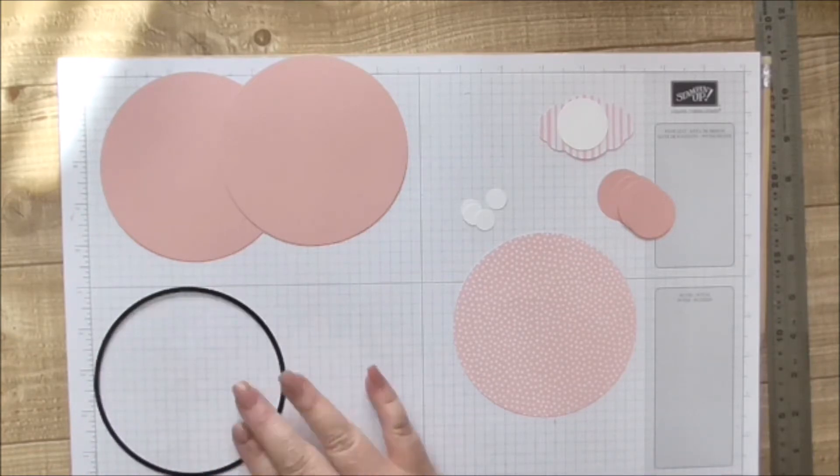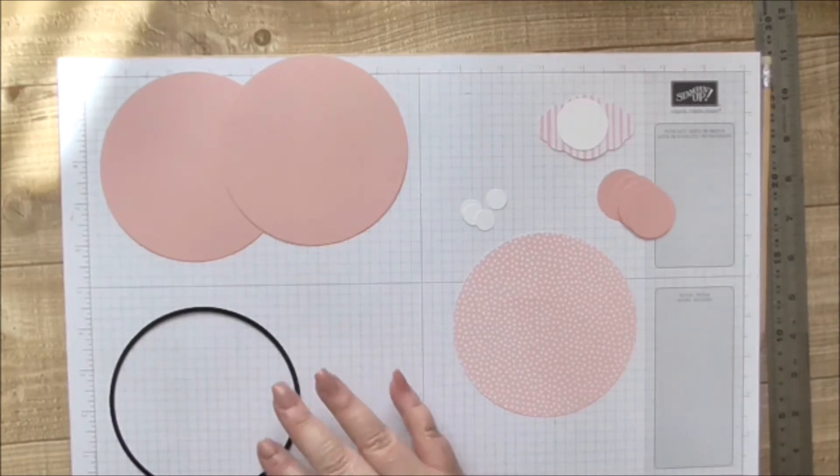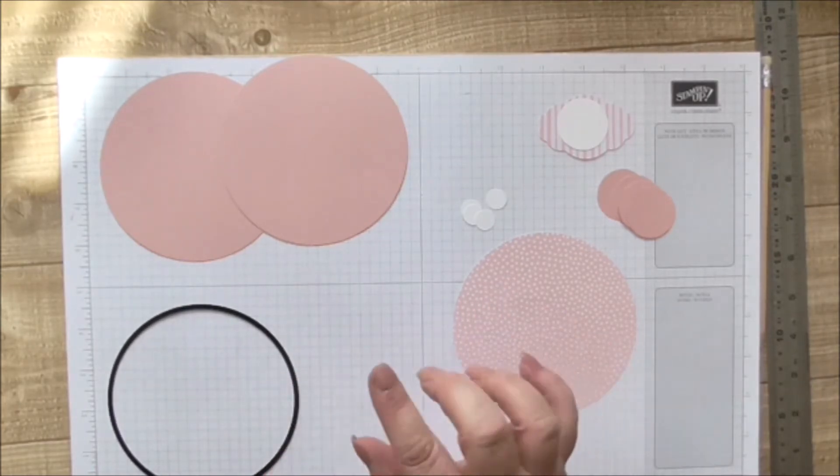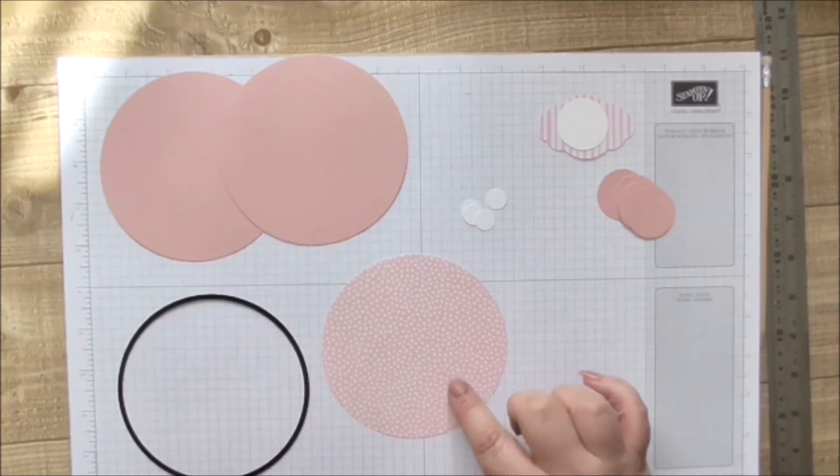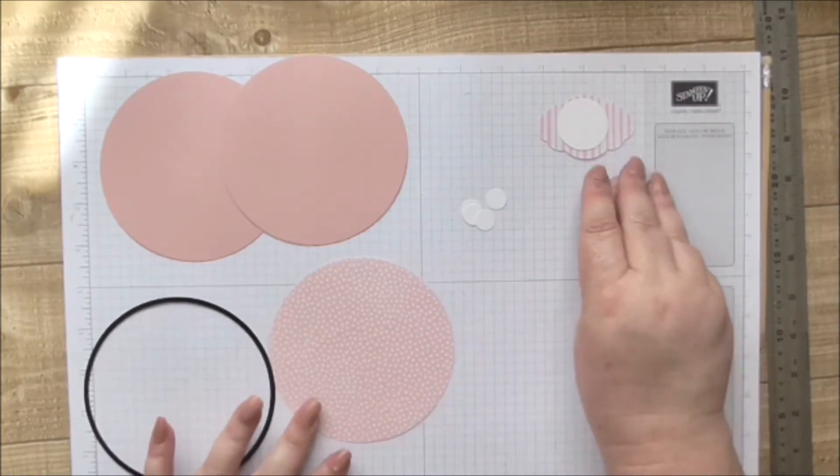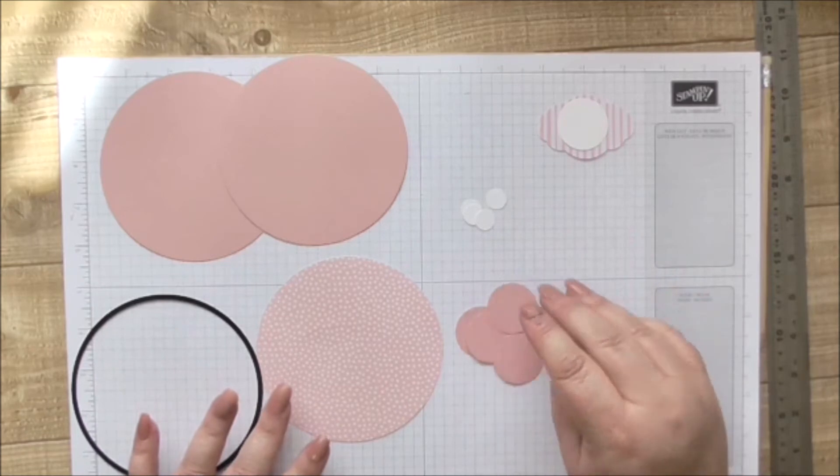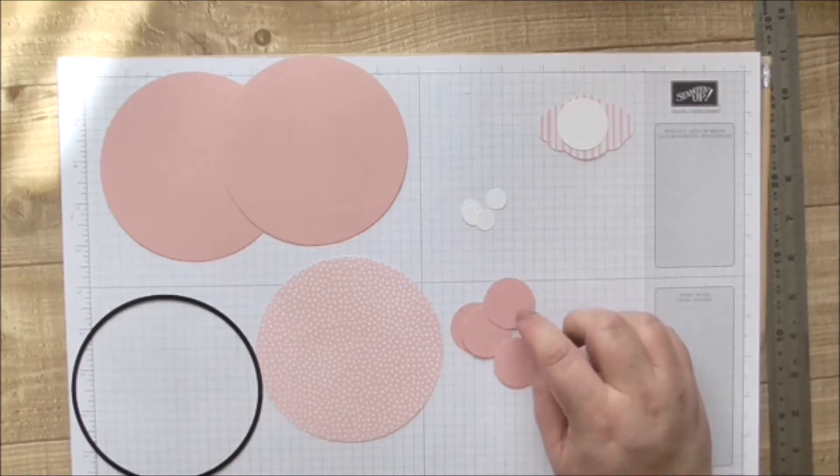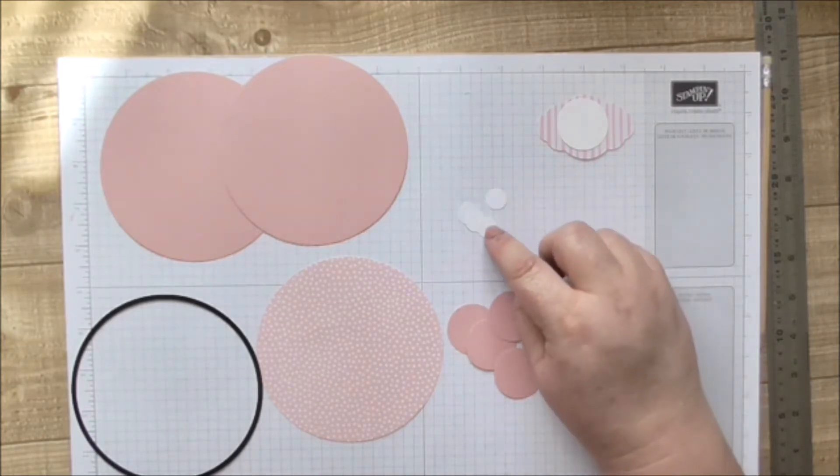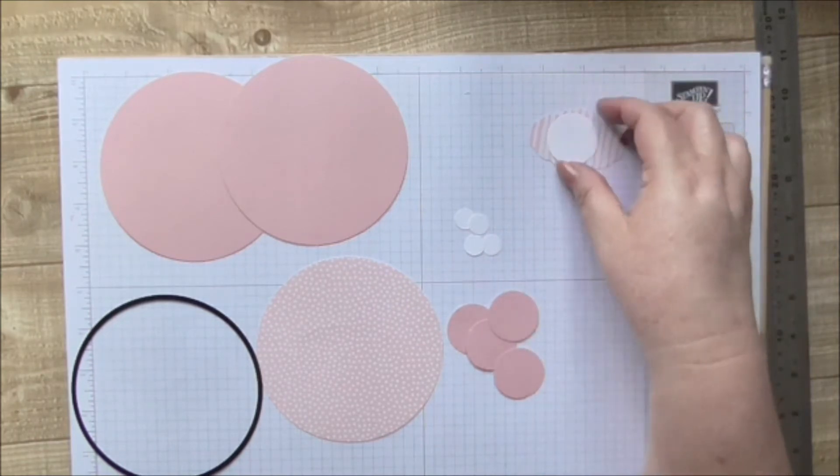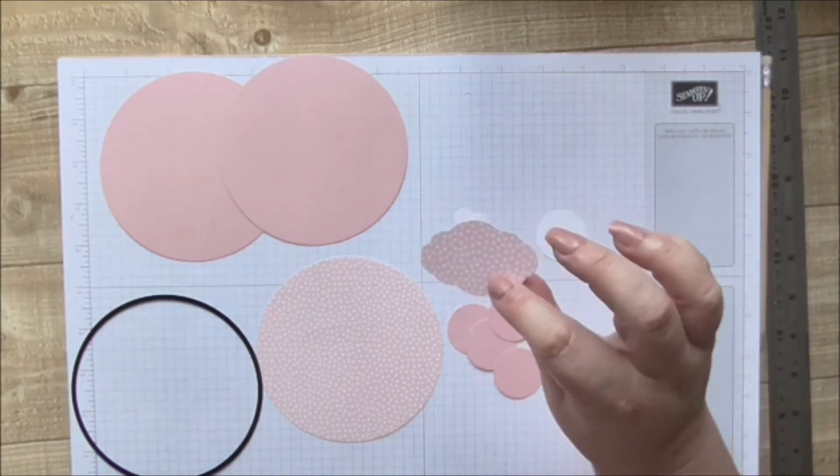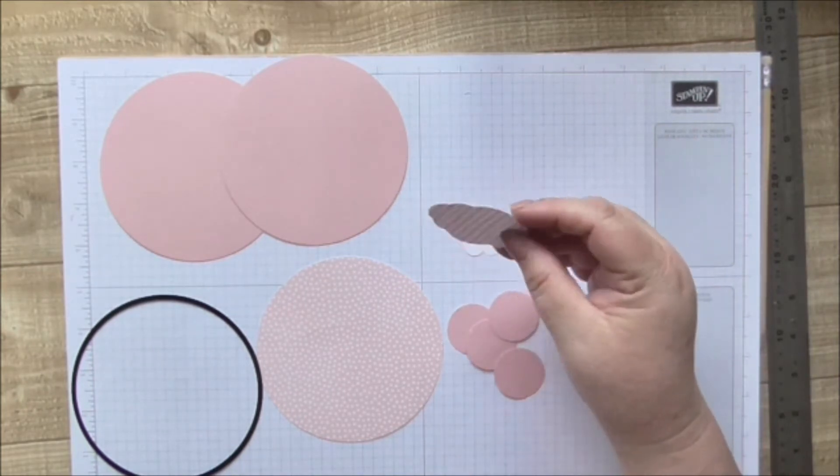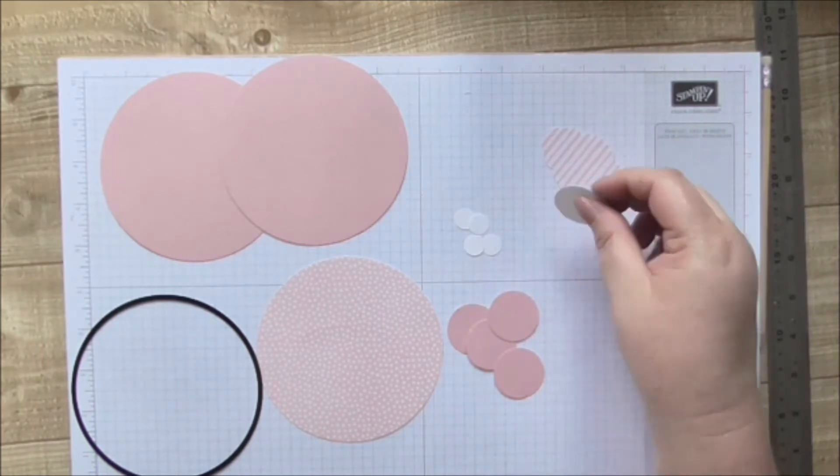So what you'll need is two of those, however you choose to cut them out. You could get a circle cutter as well. You'll need one of the same size from your DSP, then four cardstock circles which are one and a quarter inch. Then four half inch whisper white circles, and another one and a quarter inch circle for the sentiment in DSP using the Pretty Labels punch.